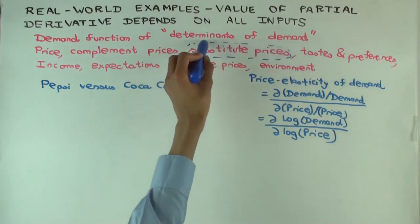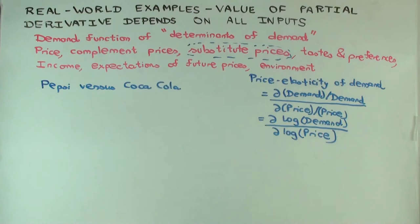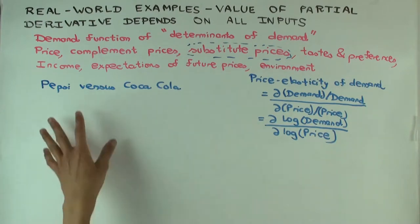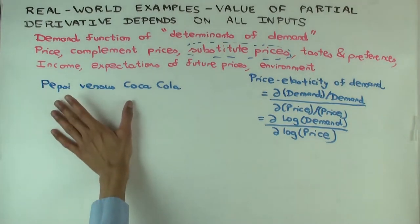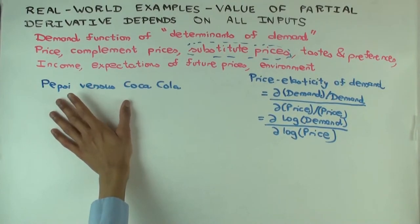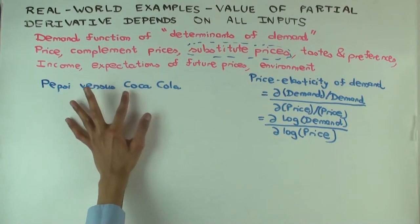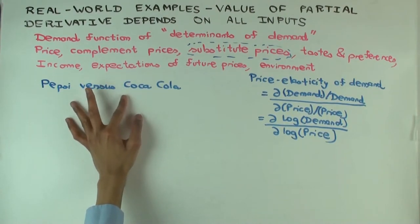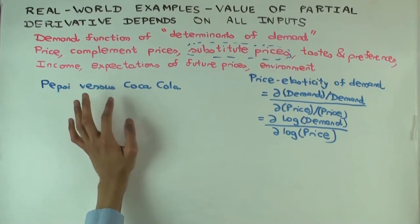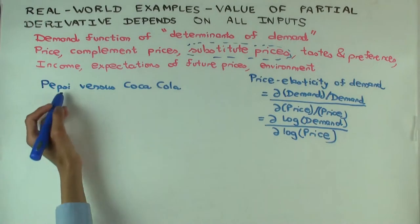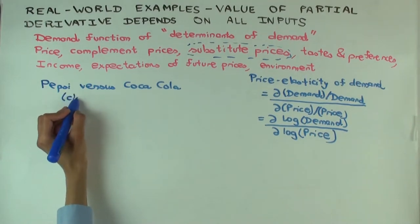What's a substitute? It's something that can be used to replace the good you're buying. The example we're going to use is Pepsi versus Coca-Cola. These are both beverages — cold drinks — that are quite similar to each other, and for many people there's not much of a preference between them. I'm going to assume that these drinks are very close substitutes.